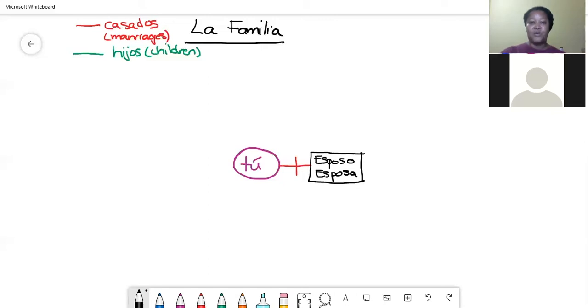You and your esposo or esposa had your hijo and your hija. So your hijo is over here, and your hija is over here.